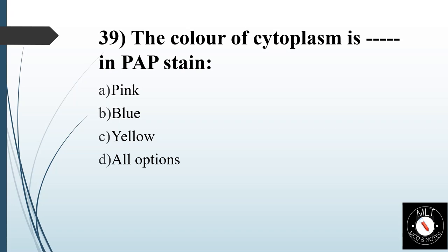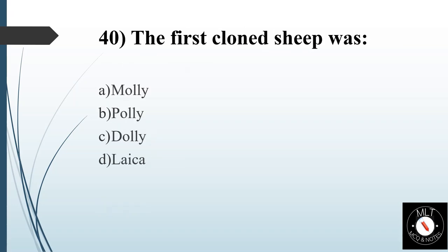Thirty-ninth question. The color of cytoplasm in H&E stain is. Option A: Pink. Option B: Blue. Option C: Yellow. Option D: All options. Answer is Option B: Blue — a blue-green color. That is the answer.